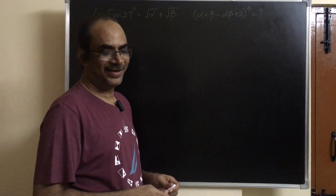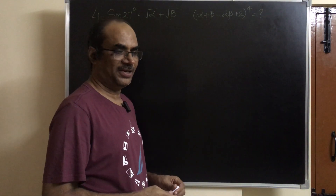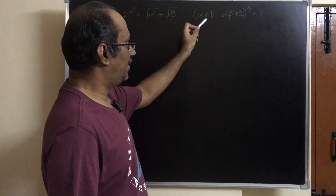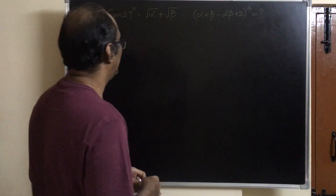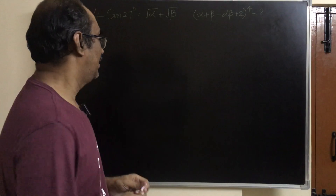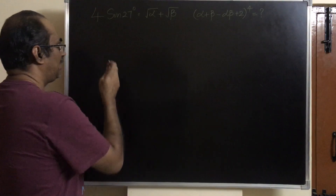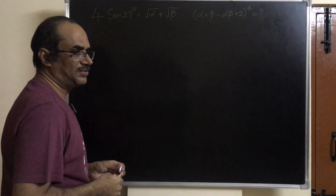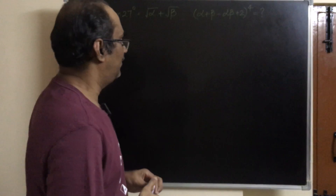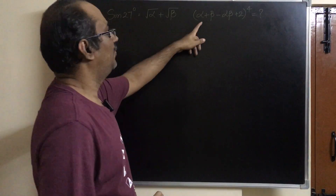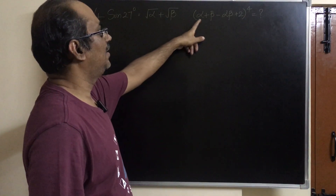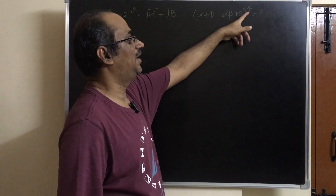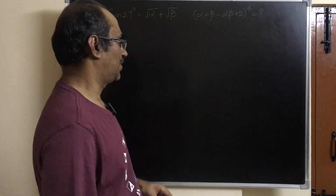Hello friends, welcome back. Let us look at this problem related to trigonometry. We have been given that 4 sin 27 equals square root of alpha plus square root of beta. We have to calculate the value of alpha plus beta minus alpha beta plus 2, whole to the power of 4.